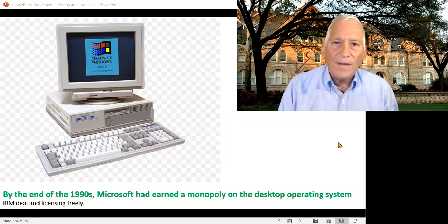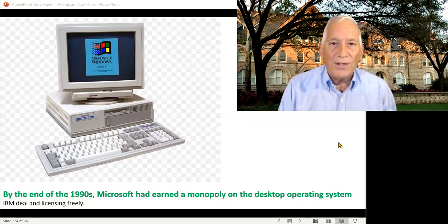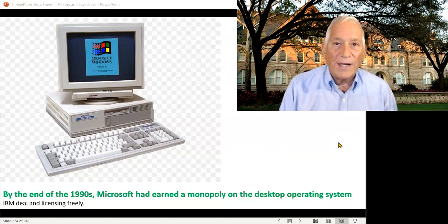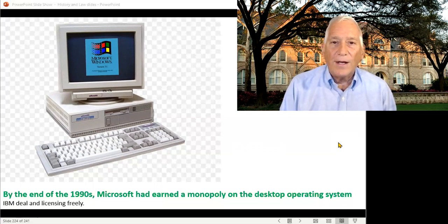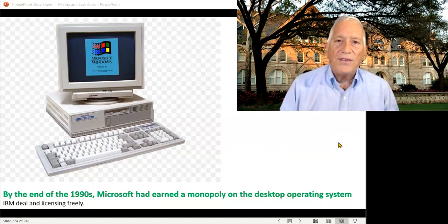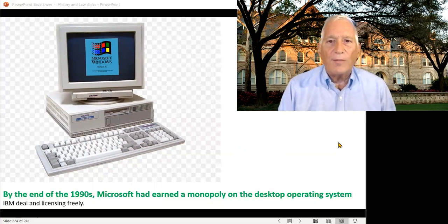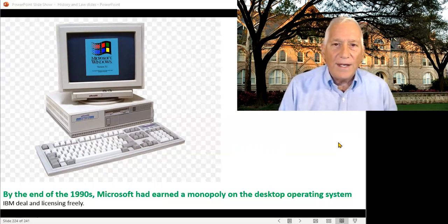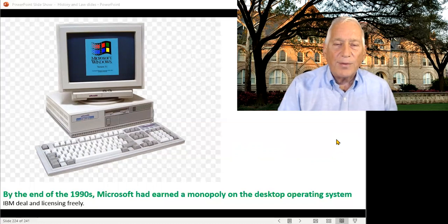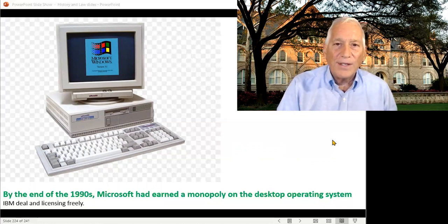They had gained that monopoly in ways that were fair and square. Bill Gates made a really smart deal with IBM early on, in which IBM agreed to license his desktop operating system — the Microsoft operating system for the IBM personal computer — but gave Microsoft the right to license it to other people as well. In a smart business move, Bill Gates, unlike Steve Jobs at Apple, licensed his operating system to any hardware maker, from Compaq to Dell to Hewlett Packard to IBM. So it became basically the standard operating system for any computer that used Intel chips — the Wintel monopoly — and it was gained by really smart, good business deals.